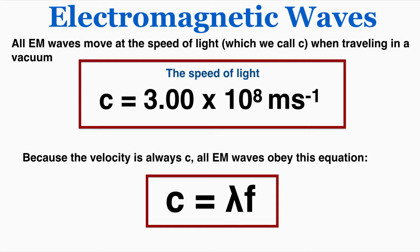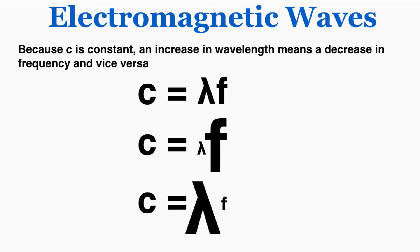So the speed of light is 3.00 times 10 to the eighth meters per second. And because the velocity is always c, all EM waves obey c equals lambda times frequency. And because c is a constant, if we increase the frequency of an EM wave the wavelength is definitely going to decrease, and if we increase the wavelength the frequency is definitely going to decrease.